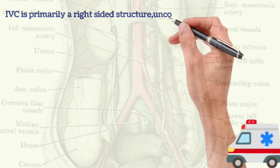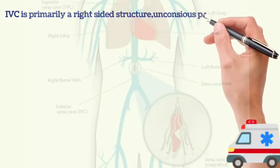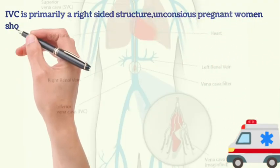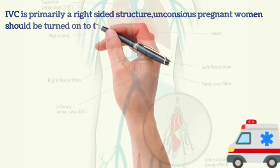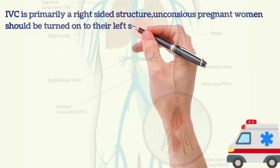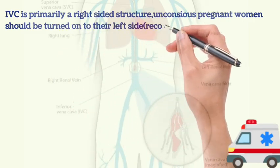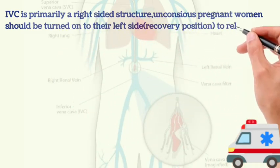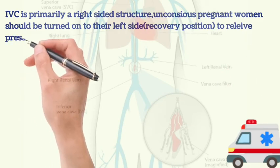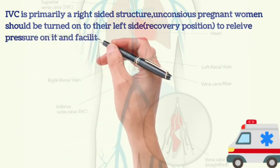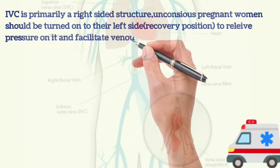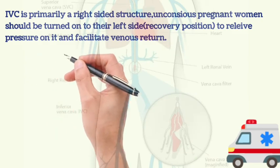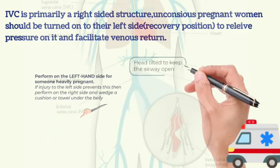Because the inferior vena cava is primarily a right-sided structure, unconscious pregnant women should be turned onto their left side — called the recovery position — to relieve pressure on it and facilitate venous return.